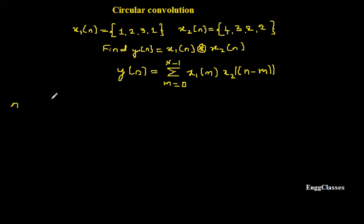I will just write the variable n, and I also write the first sequence, which is x1 of m, and the second sequence x2 of n minus m. This is what we want as per this formula. And lastly, I could find the output y of n. What could be the value for n? n can take 4 values because it is a 4 point DFT. Look at x1 of n and x2 of n. Both are sequences of length 4. Hence, y of n must also be of length 4. Those 4 values which n can take are 0, 1, 2 and 3. What is x1 of m? Replace n with m. We would get x1 of m, which is 1, 2, 3, 1.